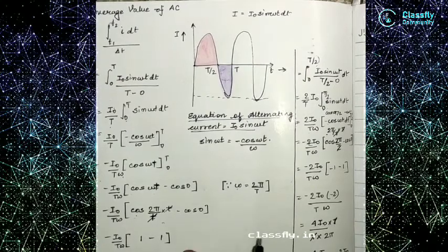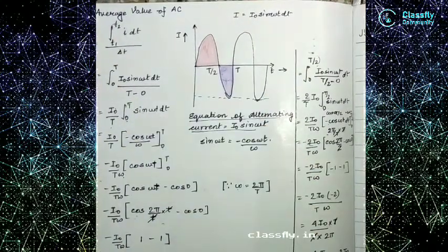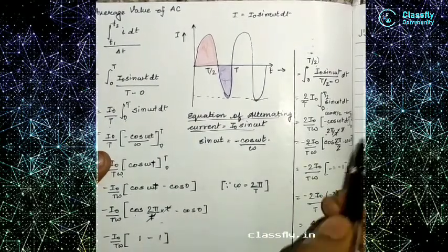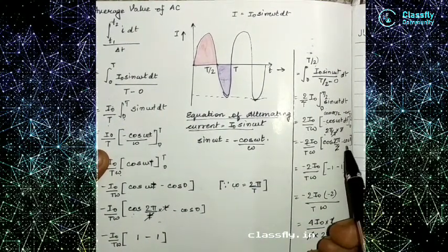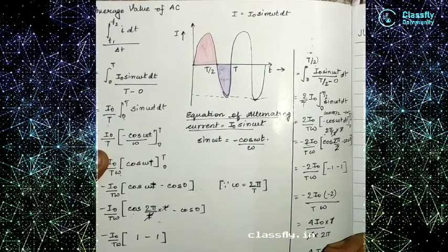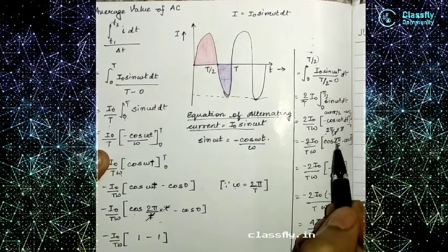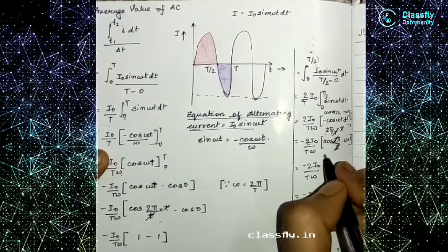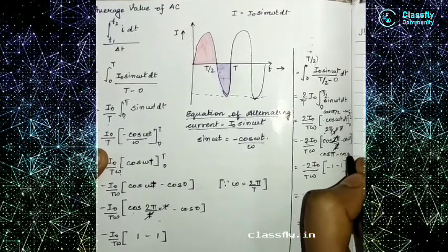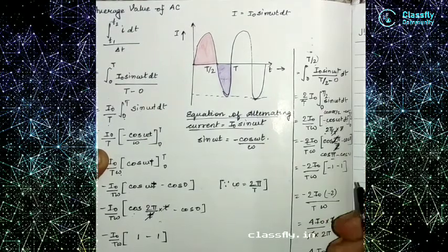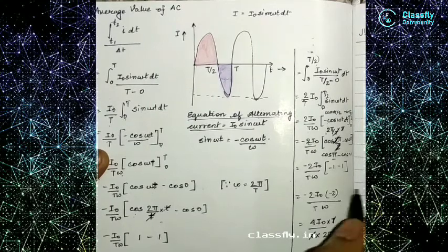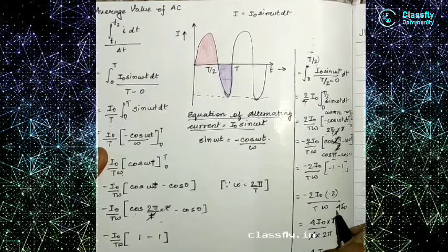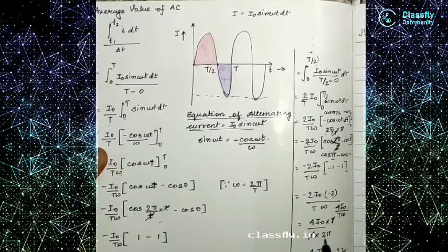For the full cycle: cos(2π) = 1, so 1 − 1 = 0, meaning the I_average for the full cycle is 0. For the half cycle, substituting we get (2I₀)/(Tω) · [cos(π) − cos(0)] = (2I₀)/(Tω) · [−1 − 1] = −(4I₀)/(Tω). Taking the magnitude and substituting ω = 2π/T, the T cancels, giving 4I₀/(2π) = 2I₀/π.